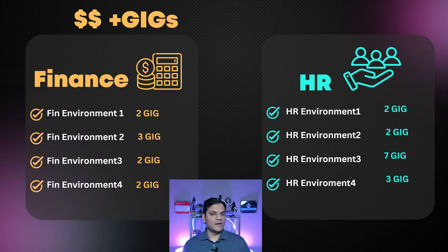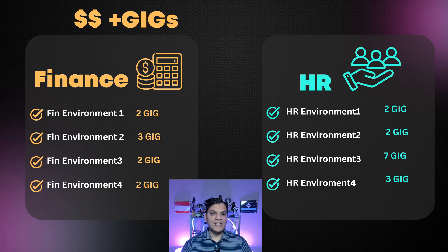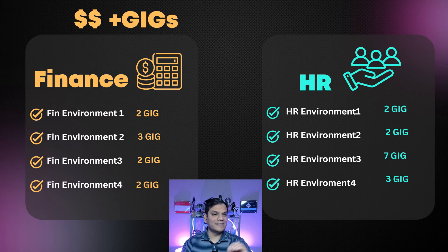Finance anticipated they'd need more environments or more capacity, so they went ahead and purchased additional capacity or licenses, increasing the overall capacity amount. However, in the past, when this capacity was purchased, that overall bundle was put in at a tenant level. So at that time, they could not say they only wanted those additional gigs for their four specific environments.